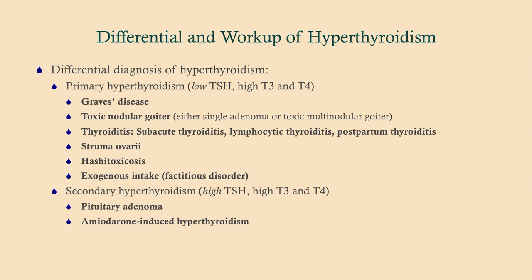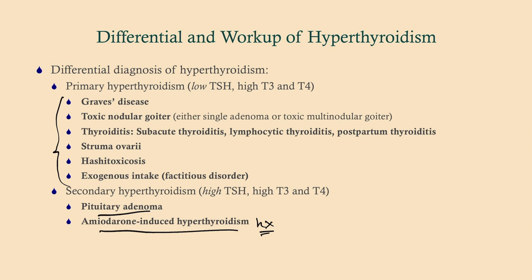For the differential, primary hyperthyroidism has a number of causes that we'll go into. Secondary hyperthyroidism — I'll just point out pituitary adenoma and amiodarone-induced hyperthyroidism, which is pretty easy to identify based on the medication history. With a pituitary adenoma, these tend to be small tumors as opposed to tumors that can cause hypothyroidism, so you're probably not going to see bitemporal hemianopsia. If you have a high TSH and high T3 and T4, you'll want to CT and probably MRI these patients.